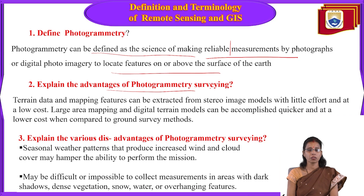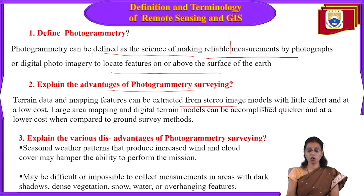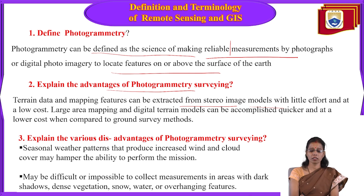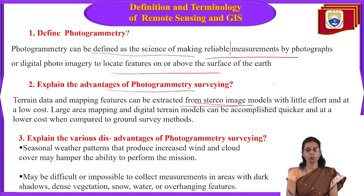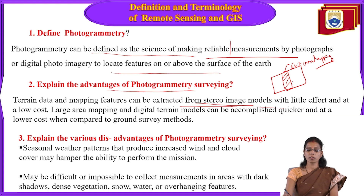Regarding the overview of photogrammetry surveillance: terrain data and mapping features can be extracted from stereo images with little effort and at low cost. The stereo image is one which has overlapping areas — 60% of the area will be overlapping — and this 60% overlapping area will show us a 3D illusion.